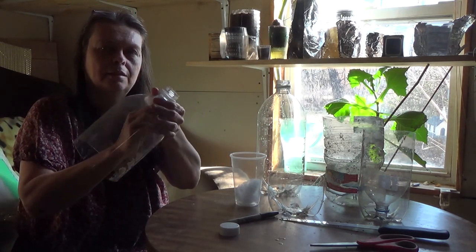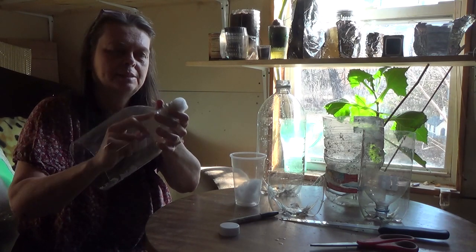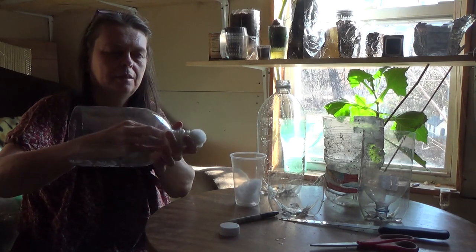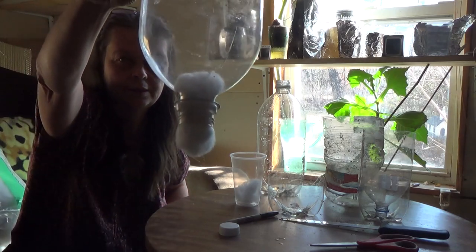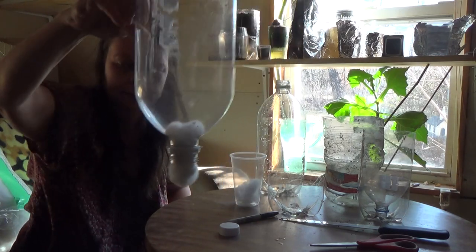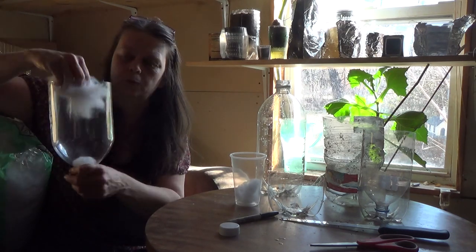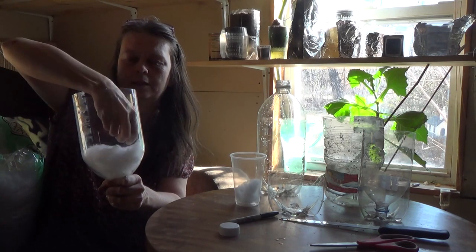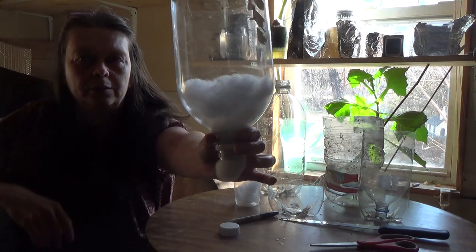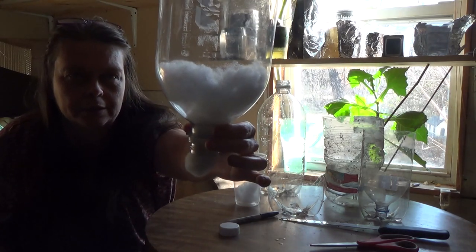I just take the cotton batting, or this is actually polyester batting, and you put it in like this. Sometimes the more moisture you want in, the more batting that you want in. Sometimes I'll do batting like this if I want more moisture in the container.